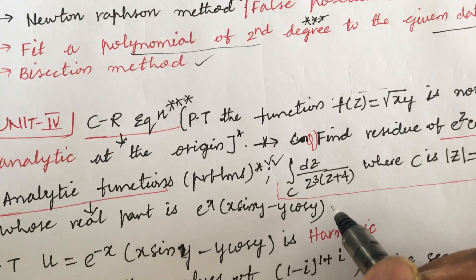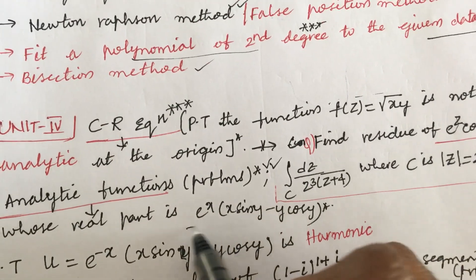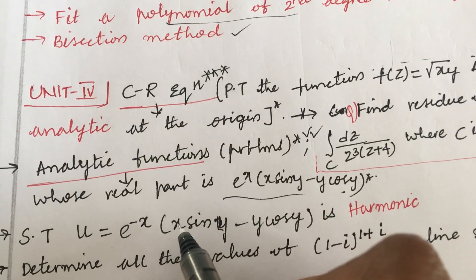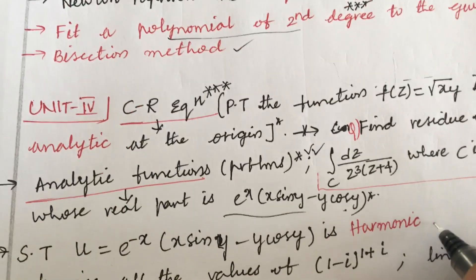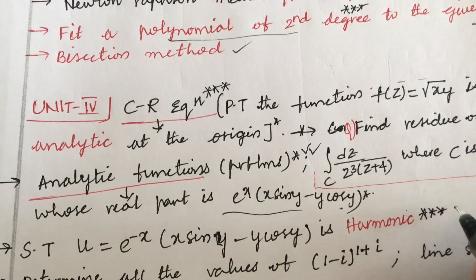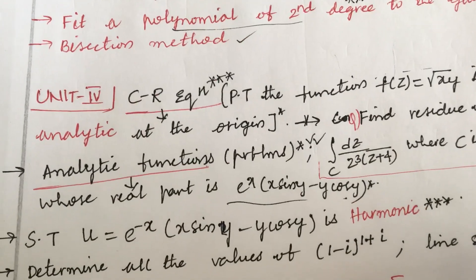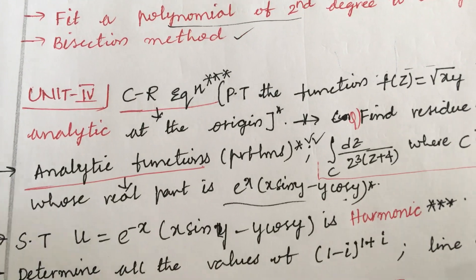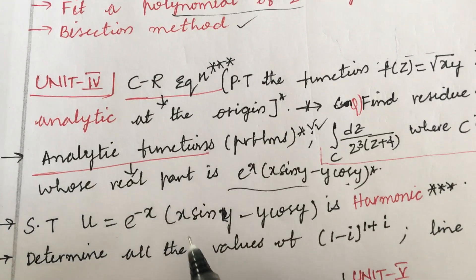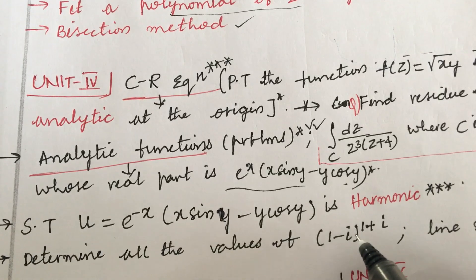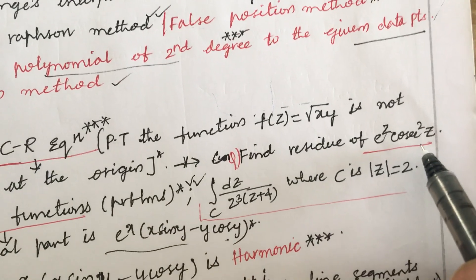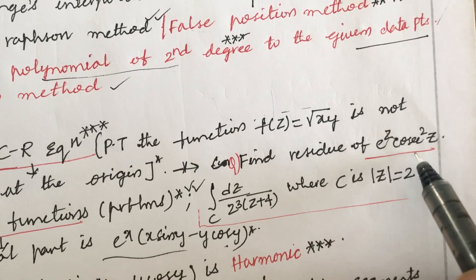Show that u equals to e to the power minus x of such relation is harmonic or not is also set with the top most and the short question in the paper. You should be thorough with each and every parameter and the concepts which I am highlighting failing which you cannot clear even this time. Determine all the values of (1 minus i) to the power (1 plus i) may be the short question. The line segment problems as well as find the residue of e to the power z and cos squared z is said to be the top most question.